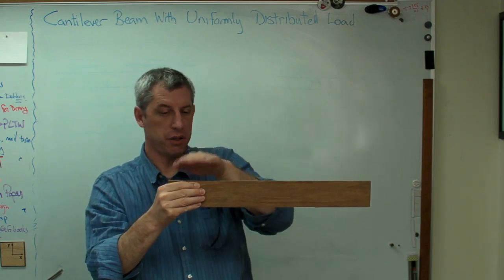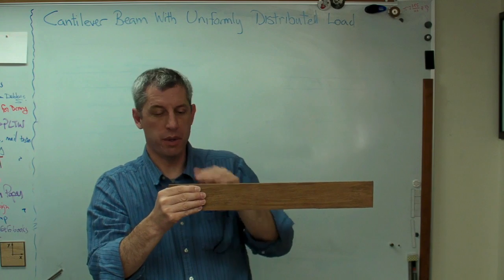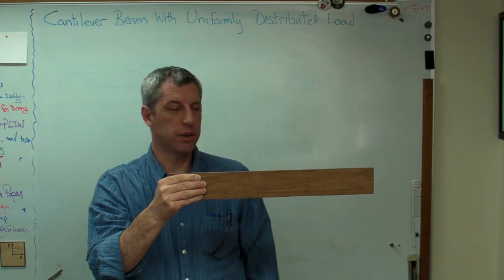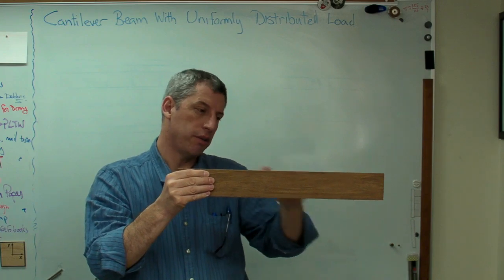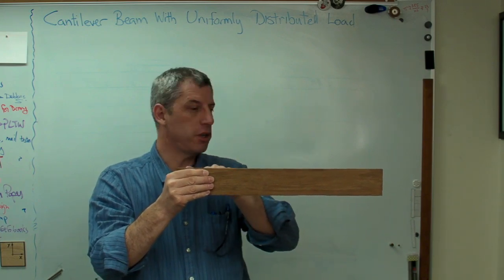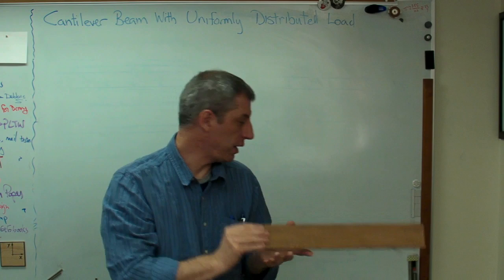Now we're going to assume we've got a uniform load going down the beam. This might be the result of stacking something along the beam. Maybe we stack bricks or sandbags or people or something like that. So we've got a load down, and the load shear moment diagram is going to show that this bends down. So that's the cantilevered beam.